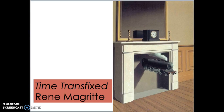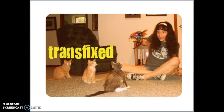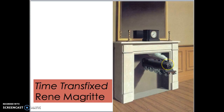Then we have Time Transfixed. We have this clock, a train that's coming out and then stopping, candlesticks with no candles, and the title Time Transfixed. Transfixed means very still, as if nailed to the spot — like these cats that are staring and will never look away. When we look back at this painting, it makes sense that the train is transfixed: it's not going anywhere. There are many other reasons we could probably think of for why it has that title.